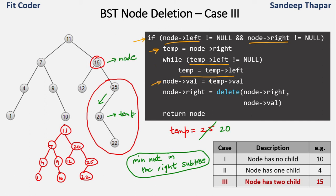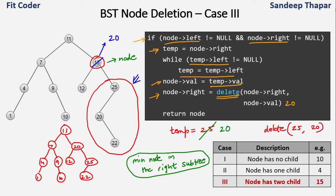We replace the value of node with the value of temp, so node 15 becomes 20. Then we call the delete function again for the right subtree of node, passing node 25 and the value 20 to be deleted. This recursive call falls into case two — a node with only one child — so we simply replace 20 with 22. That gives us the resultant binary search tree.